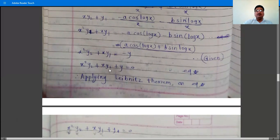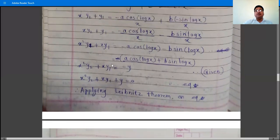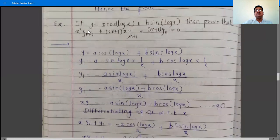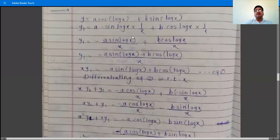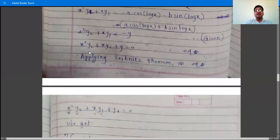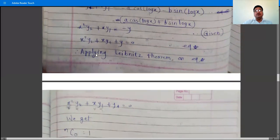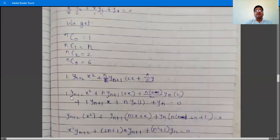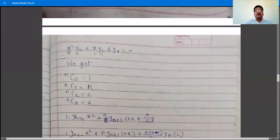After the second order derivative we have the equation x²y₂ + xy₁ + y = 0. Now we need to find the nth order derivative of this equation in order to prove the result. We differentiate this equation n times with respect to x using Leibniz's theorem.